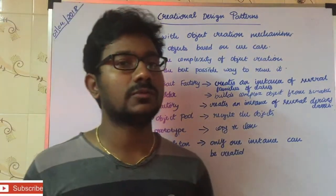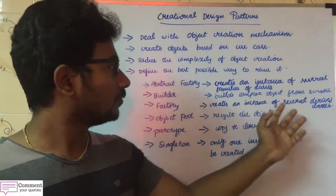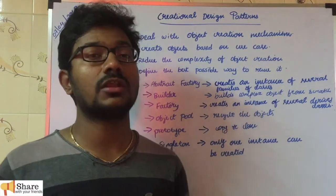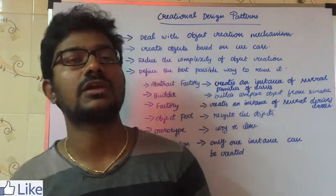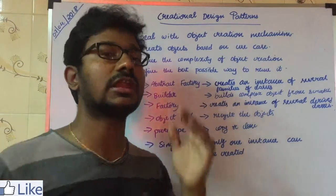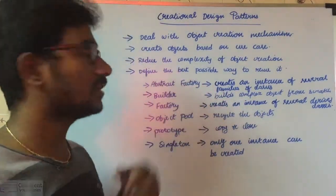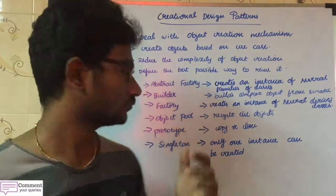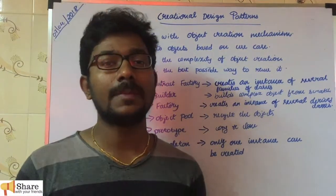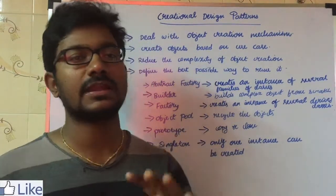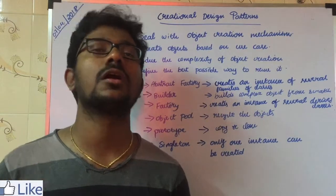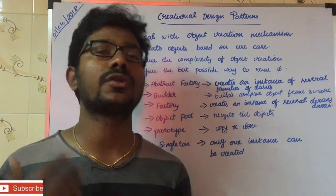Factory design pattern creates an object using several derived classes. It picks the best derived class and returns the object for that class based on user input. Then Object Pool - the main principle of Object Pool design pattern is to recycle objects that are already created.